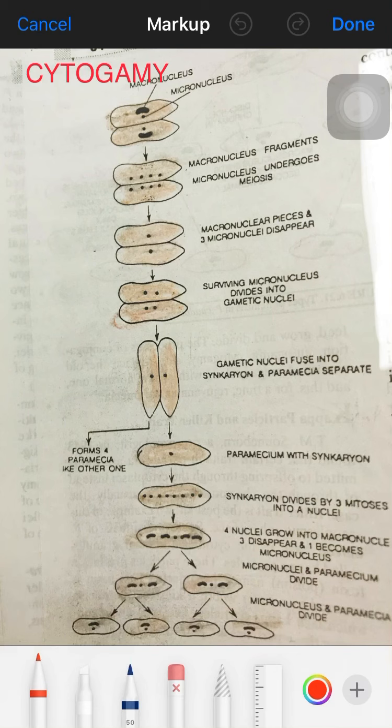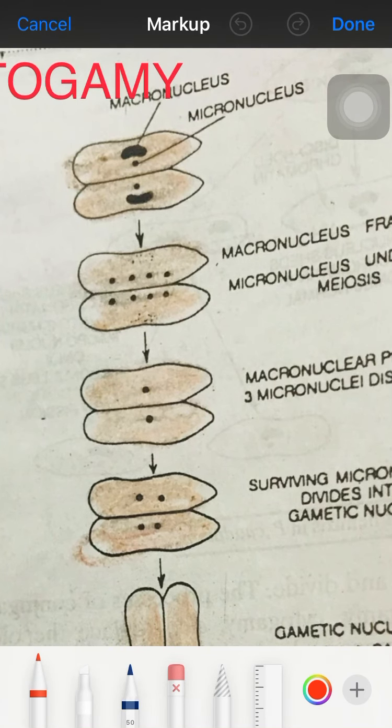Cytogamy was discovered in 1939. Two individuals join together by their oral surface, as in conjugation.